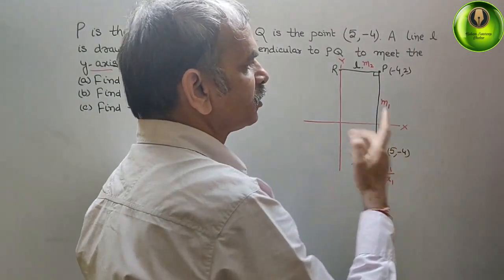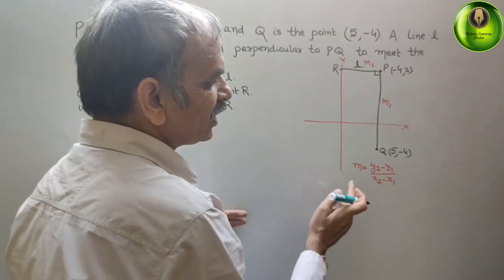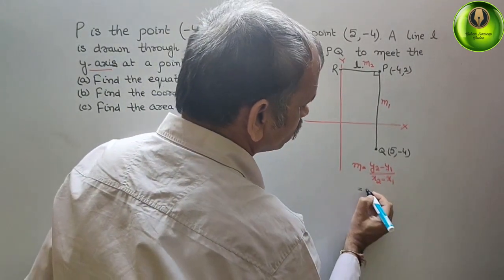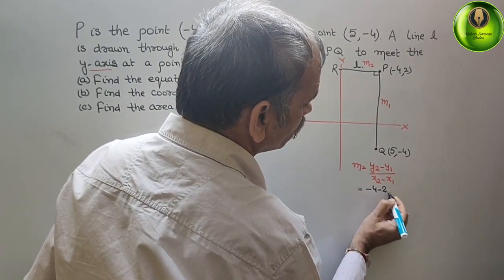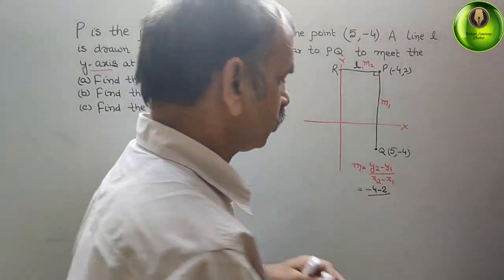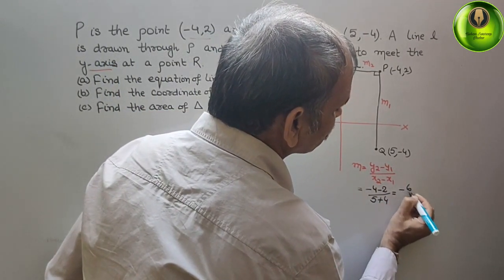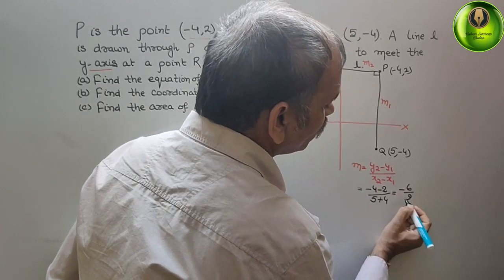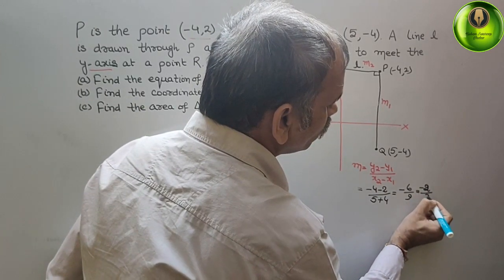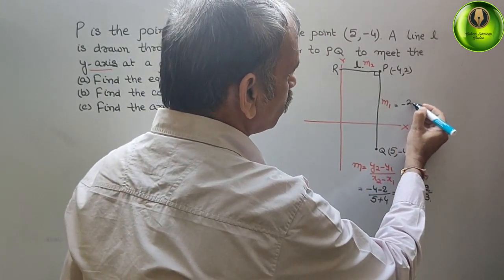We know the coordinates, so just substitute the values. We get (-4 - 2) / (5 - (-4)), which is (-4 - 2) / (5 + 4). That is equal to -6 / 9. Simplifying, we get -2/3. So this is the gradient M1 = -2/3.